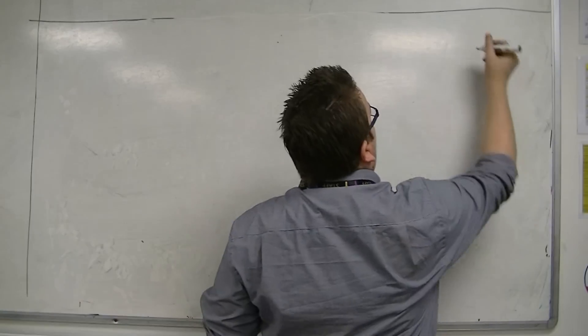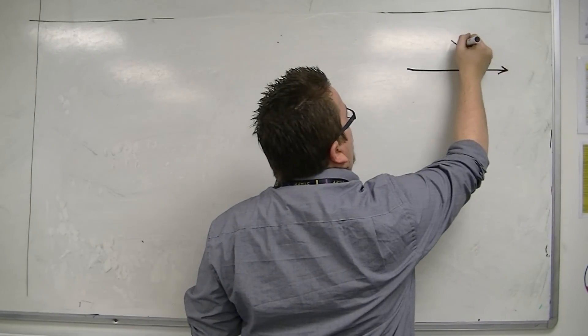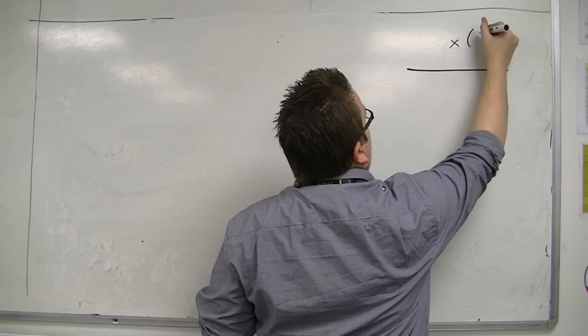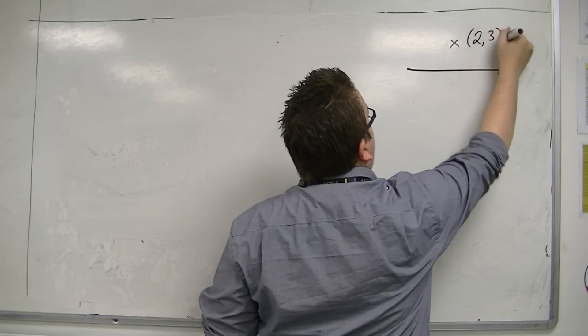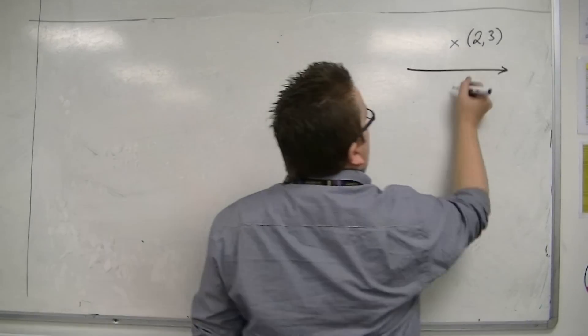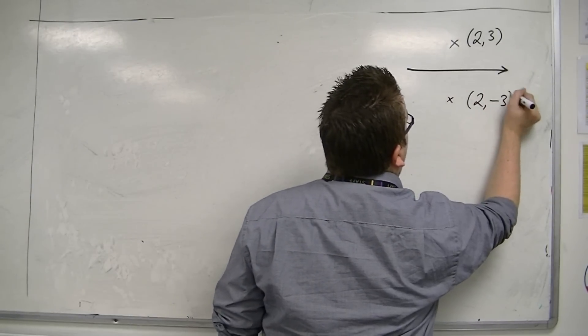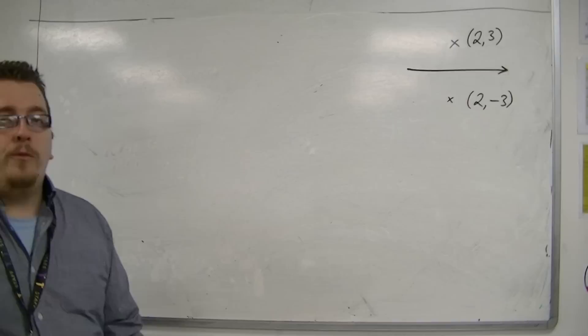If I draw in an x-axis, for example, and then I choose a random point, let's say the point (2, 3), then if I reflect this point in the x-axis, it will appear down here, and it will now have coordinates (2, -3). Well, that seems fair enough.